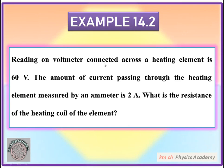Reading on voltmeter connected across a heating element is 60 volt. If we have a heating element, we have a voltmeter and the voltmeter reading is 60 volt. This means that the heating element across the potential difference is 60 volt. The amount of current passing through the heating element measured by an ammeter is 2 ampere. The current passing through the heating element is 2 ampere.